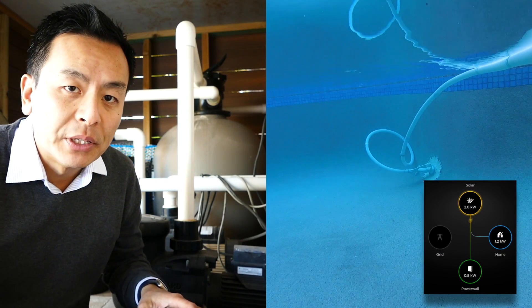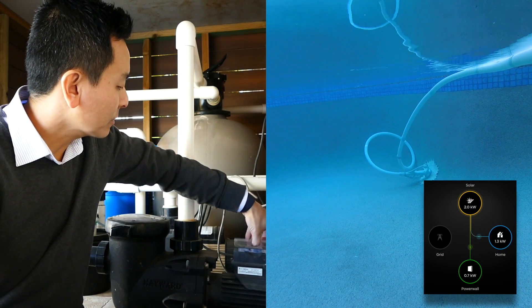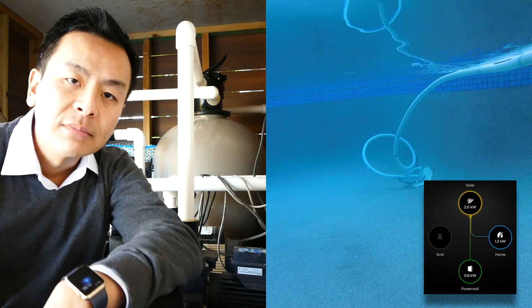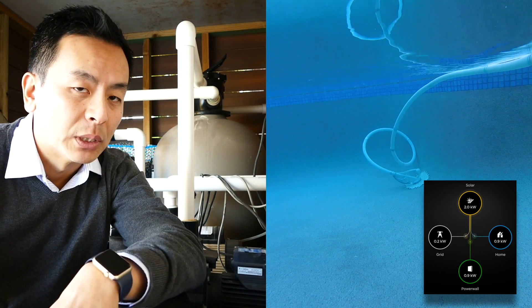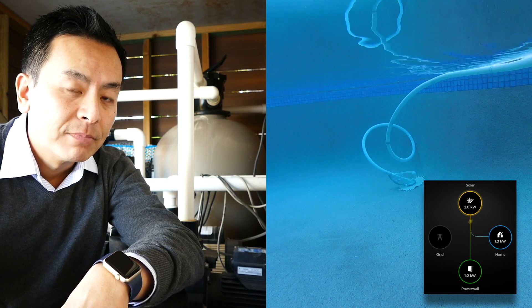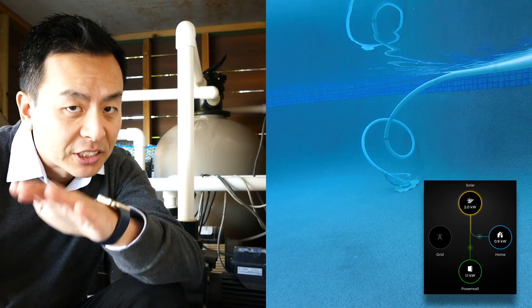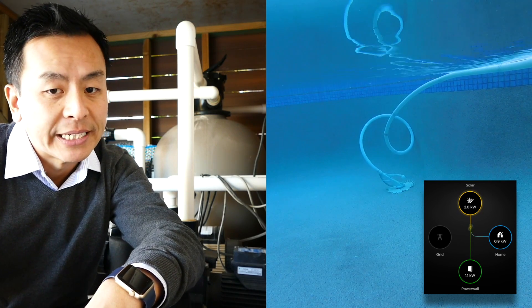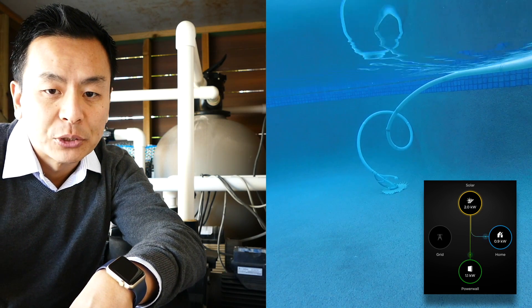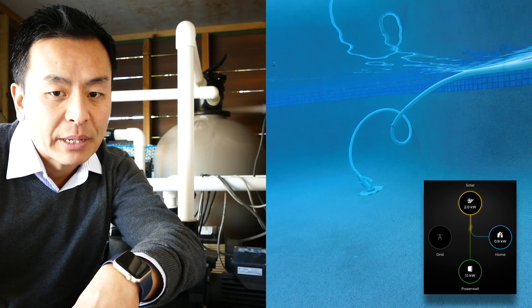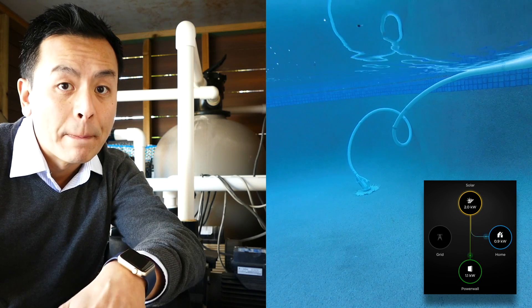So let's move it to the medium setting. And we'll just give it a second to equilibrate. You can see the noise has come down a bit and it's definitely on the medium setting. Looking at the Powerwall 2 app now and it's sitting at about 0.9 on medium setting.